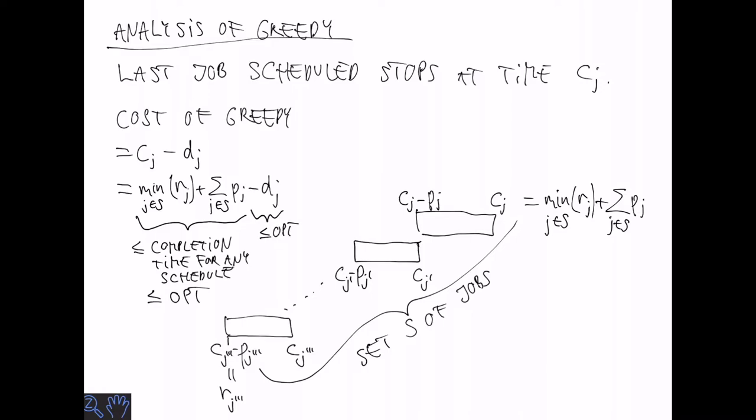Similarly, minus dj is less than or equal to opt. And in total this is less than two times opt.